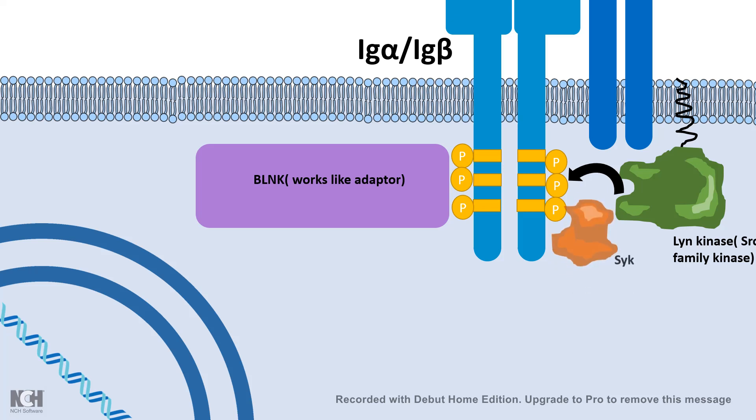Lyn kinase can also bind to the phosphorylated Igα and Igβ and trigger several molecular and cellular events. The BLNK adapter is very important for signaling because it serves as a platform for several signaling components to come together and set up a new signaling system.